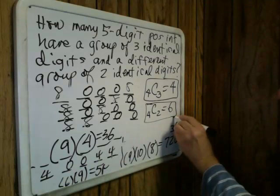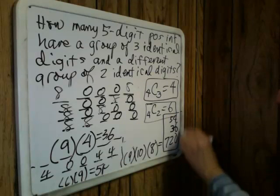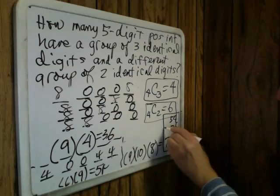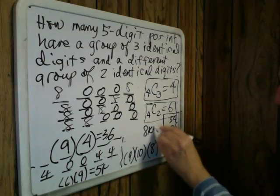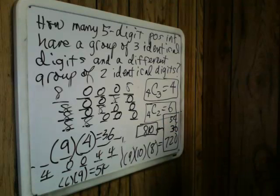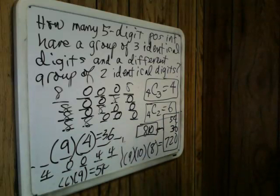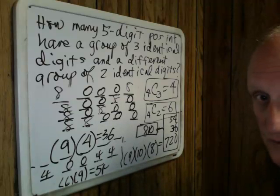Adding all the cases together: 720 + 36 + 54 = 810. That is our final answer — the number of five-digit positive integers which have a group of three identical digits and another group of two identical digits.